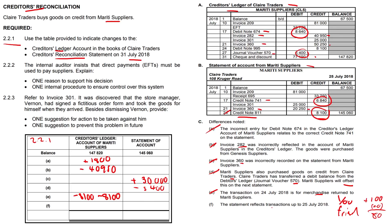If the statement reflects transactions up to 25 July 2018, we exclude all amounts after that date. The cheque and discount of 77,190 dated 31 July — we simply take it out of our statement of account. Adding up both columns, we get 92,470 on each side. If they differ slightly, write the same amount and you earn the method mark.